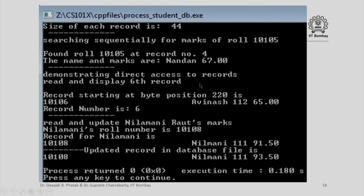Next, we were demonstrating direct access to records. We want to read and display the sixth record. The record starting at byte position 220. Please note this 220 is 6 minus 1 times 44, which was the record size. This is the starting byte for record number 6, and this is the record: 10106 Avinash and the details.